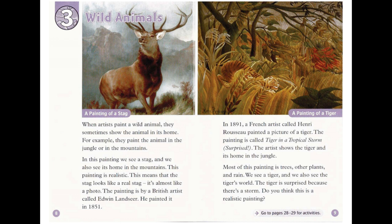In this painting, we see a stag, and we also see its home in the mountains. This painting is realistic — this means that the stag looks like a real stag. It's almost like a photo. The painting is by a British artist called Edwin Landseer, who painted it in 1851. In 1891, a French artist called Henri Rousseau painted a picture of a tiger. The painting is called Tiger in a Tropical Storm, Surprised.